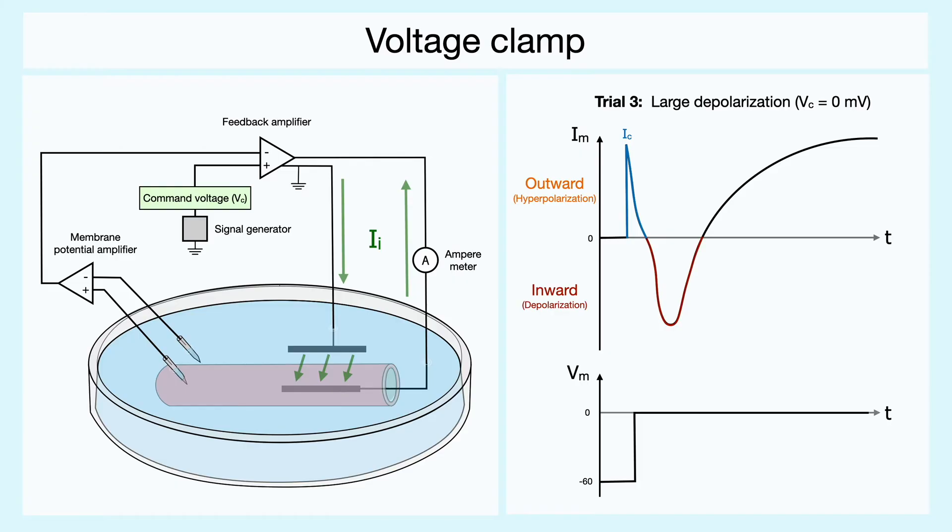Then it is followed by a very brief inward current, and then an outward current that persists until it reaches a certain plateau. Through this curve, you can also imagine that there is a certain constant current coming from the leak channels that still flows along.